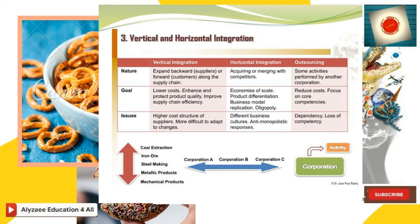One can relate coal extraction, iron ore, steel marketing, and metallic production towards the corporation and this activity as an example of vertical integration along the supply chain.